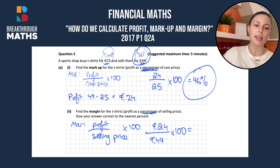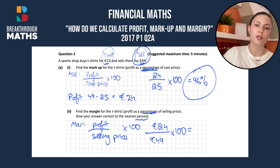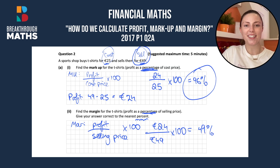We need to give the answer correct to the nearest percent, so that will be 49% when you round it.